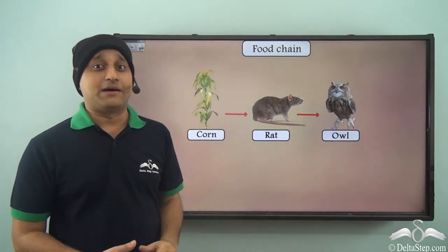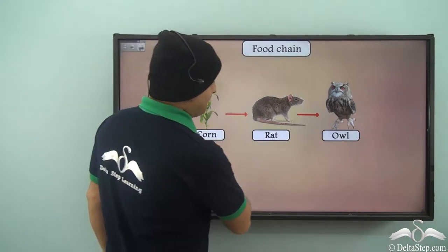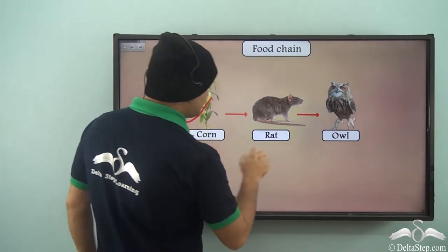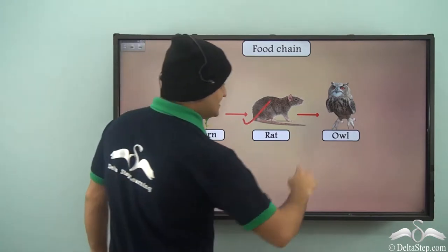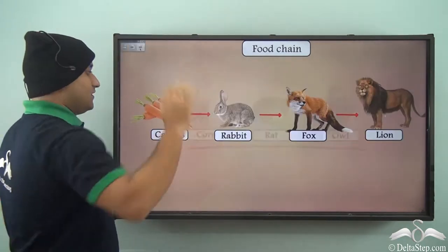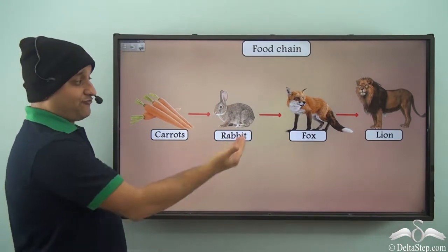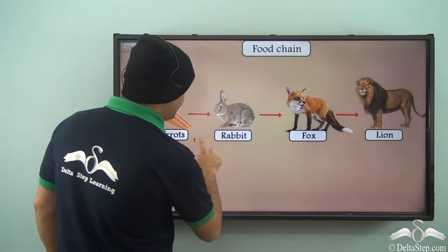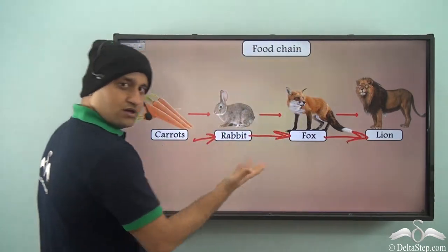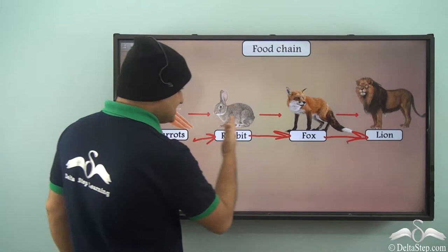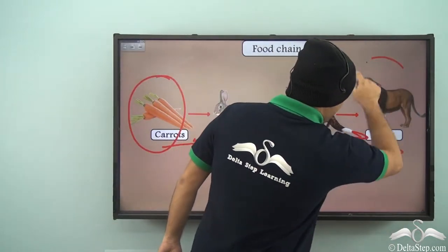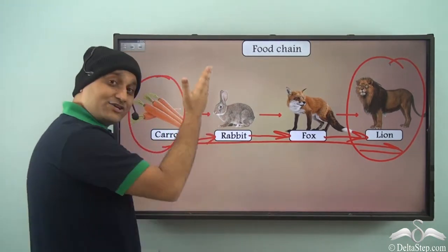Here is another example of a food chain with three organisms: a corn plant is eaten by the rat, and the rat is eaten by the owl — a very simple food chain present in the ecosystem. Similarly, there is a bigger food chain: carrots are eaten by the rabbit, the rabbit is eaten by the fox, and the fox is eaten by the lion. So again a chain is formed, starting with a plant and ending with the lion at the top.